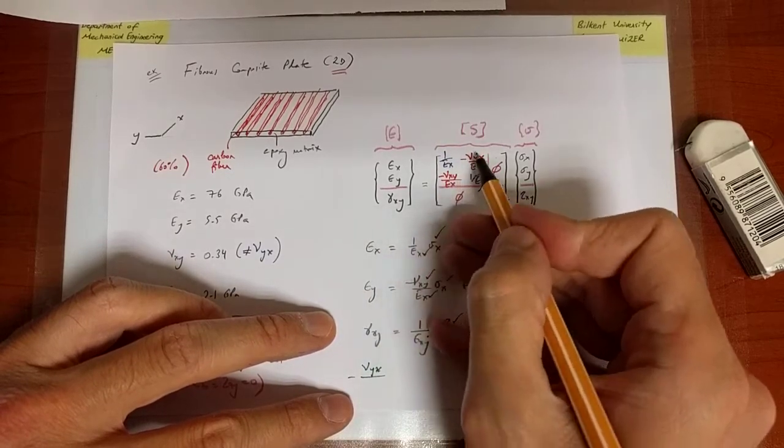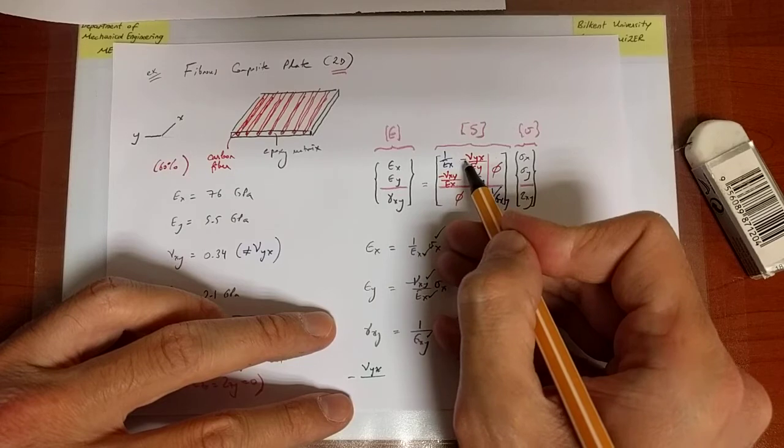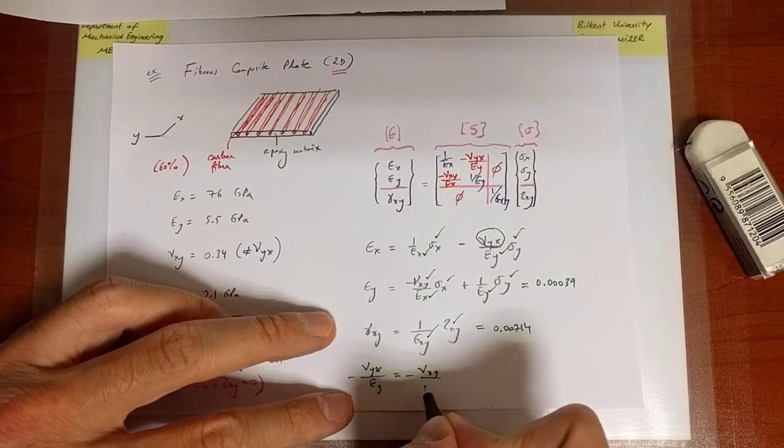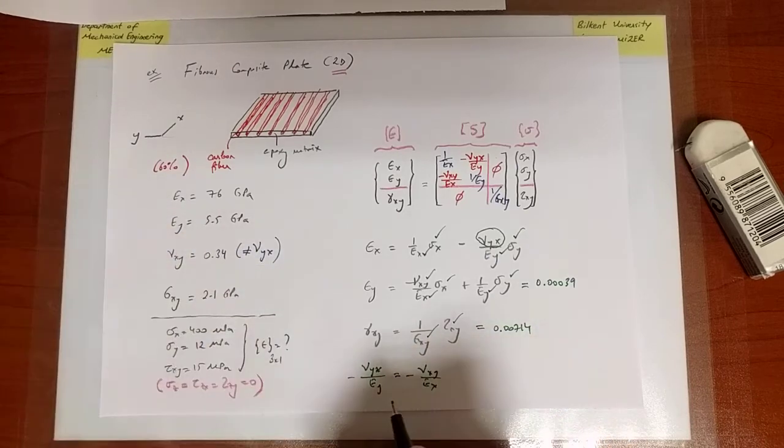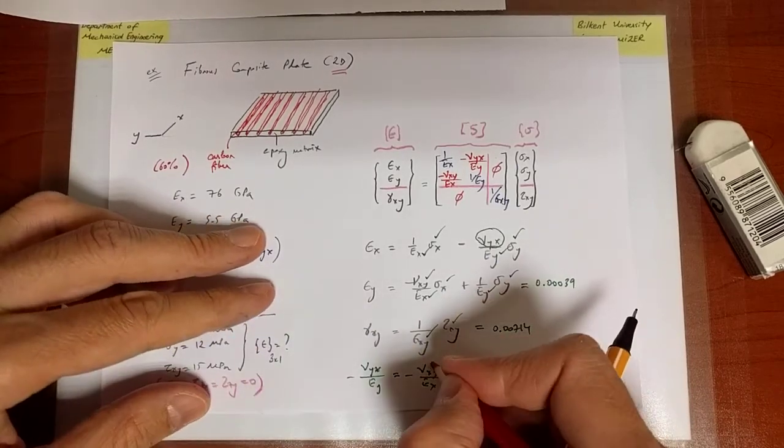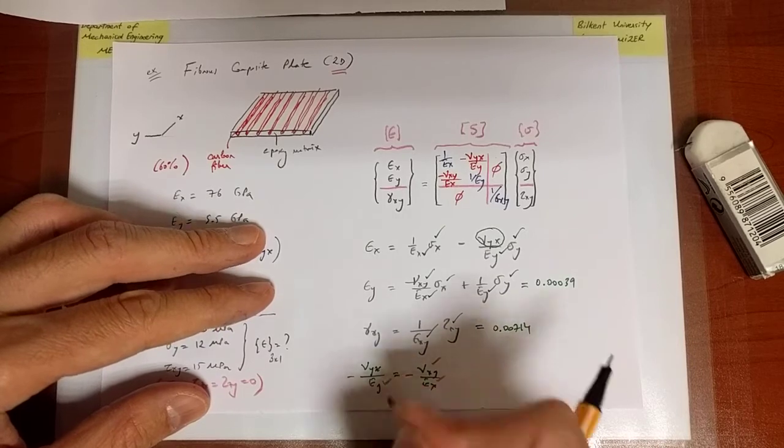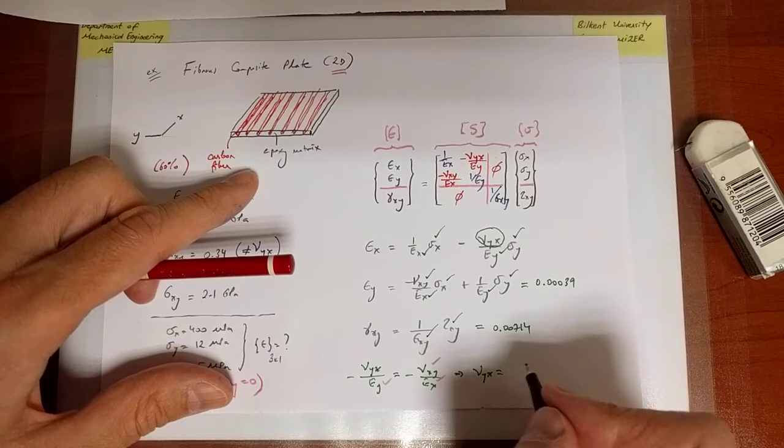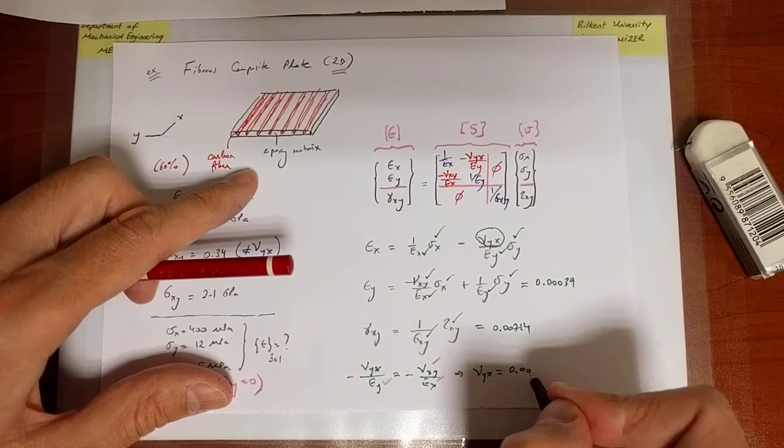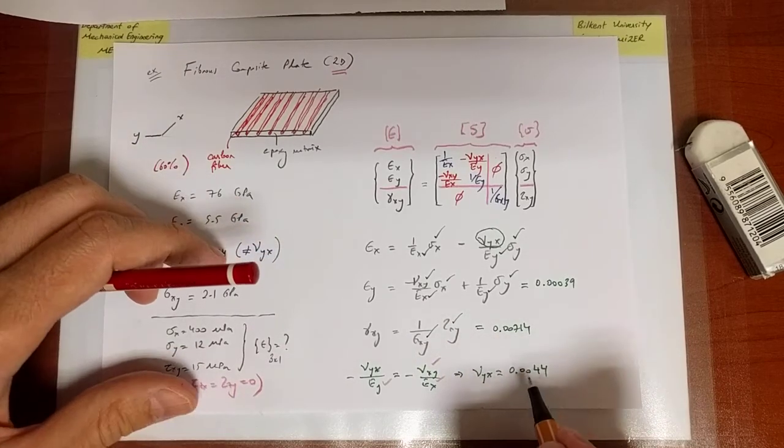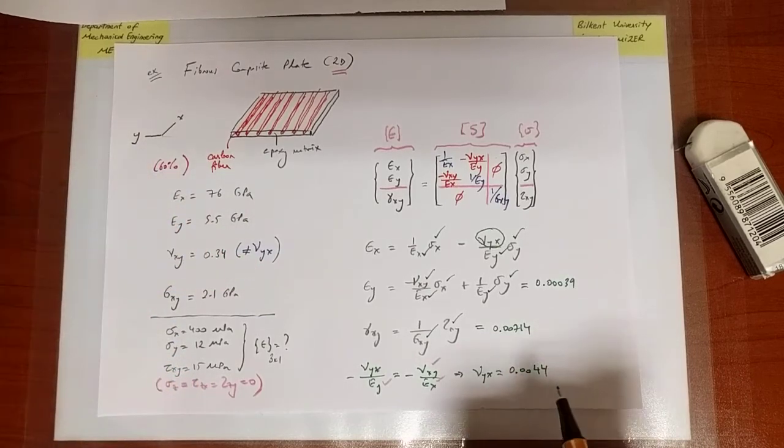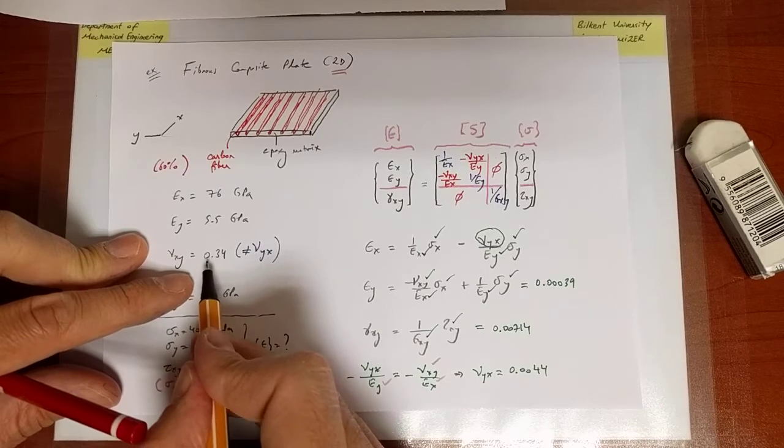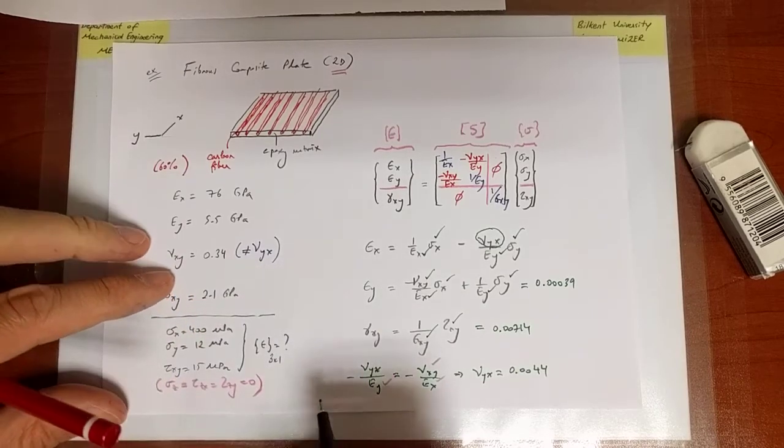Minus nu_yx divided by Ey is equal to minus nu_xy over Ex. And here now I know the value of xy, Ex and Ey. Therefore you can calculate nu_yx to be approximately 0.044, which is very, very close to 0, almost like there is no Poisson effect, right? Which is very different from nu_xy, so they are not equal.